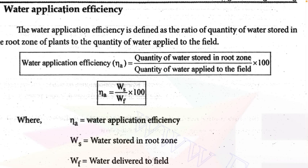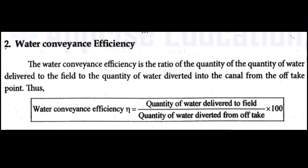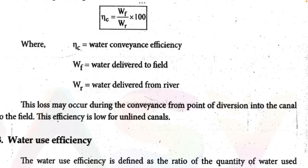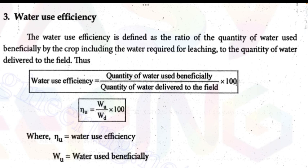Water conveyance efficiency (Eta_C) equals the quantity of water delivered to the field divided by the quantity of water diverted from the off-take, multiplied by 100%. Eta_C = WF / WR × 100%. Water use efficiency (Eta_U) equals the quantity of water used beneficially divided by the quantity of water delivered to the field, multiplied by 100%.